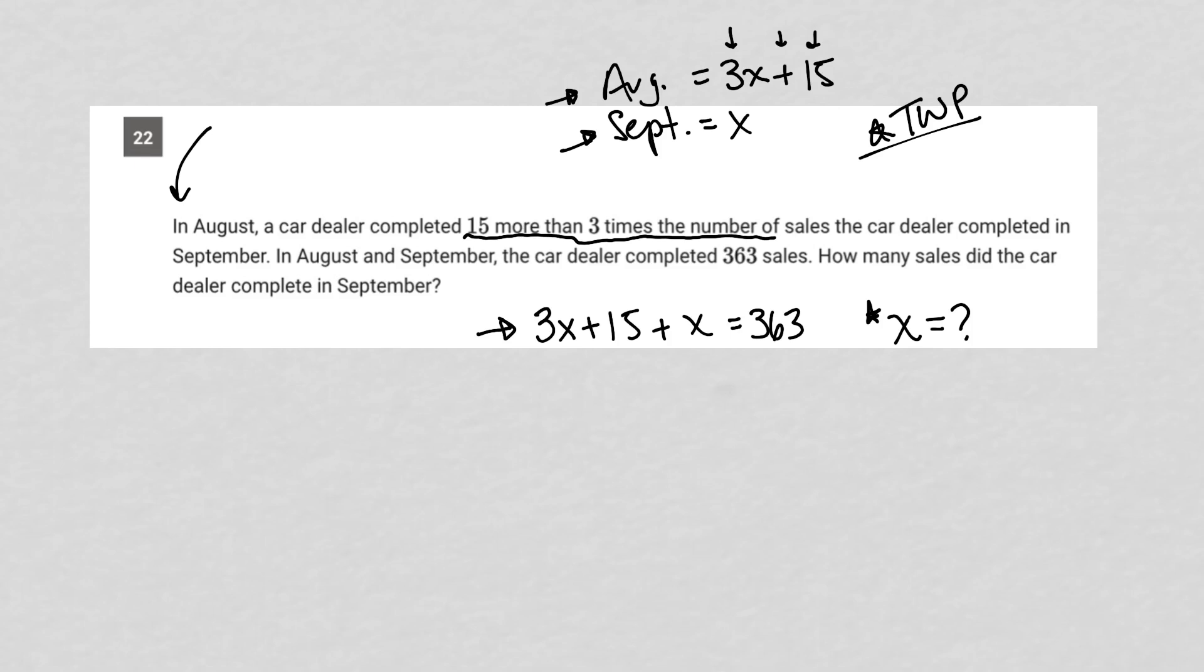Let's go ahead and simplify this equation. We have 3X plus X, which is 4X. So 4X plus 15 equals 363. We can subtract 15 from both sides of this equation. 15 is gone, and we just have 4X on the left-hand side.